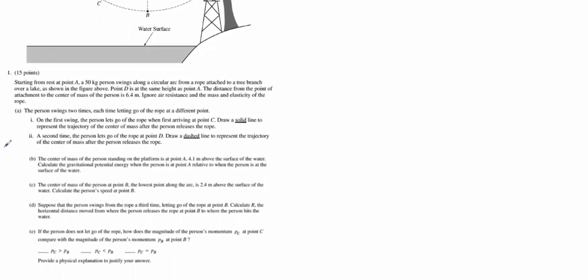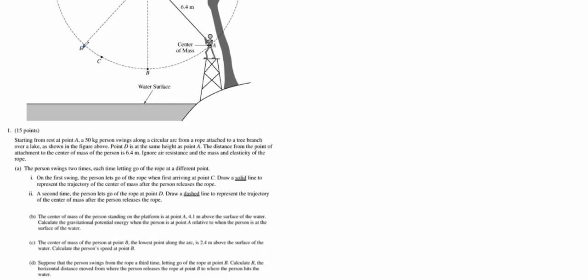Starting from rest at point A, a 50-kilogram person swings along a circular arc from a rope attached to a tree branch over a lake, as shown in the figure. Point D is the same height as point A. The distance from the point of attachment to the center of mass of the person is 6.4 meters, the length of the pendulum. We're going to ignore air resistance and the elasticity of the rope itself.